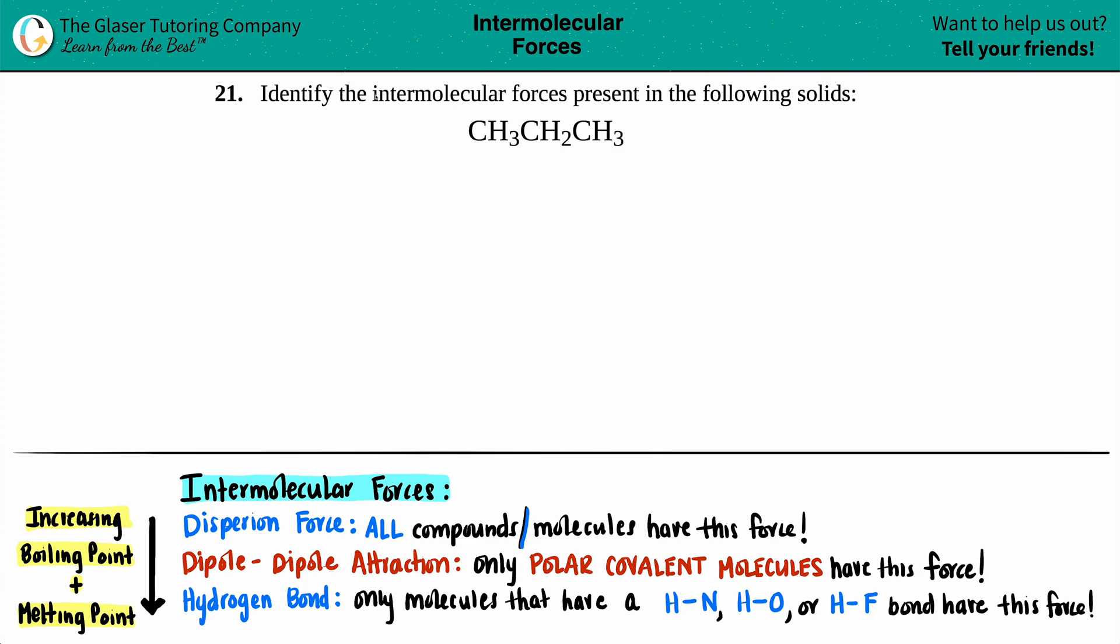Number 21: identify the intermolecular forces present in the following solids, and then we have propane which is CH3CH2CH3. All right, so we have to identify the intermolecular forces. The easy way to go about this is to draw the Lewis structure of whatever compound that they give you.